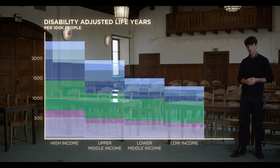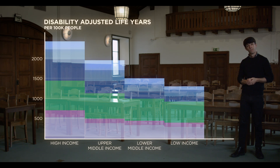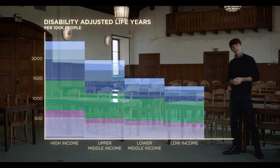Yes, the richer a nation is, the more its inhabitants are likely to suffer. And there you have it. The reason why so few talk about the global distribution of mental illness is because the pattern doesn't fit into the notion of economic growth as a panacea to all human problems.